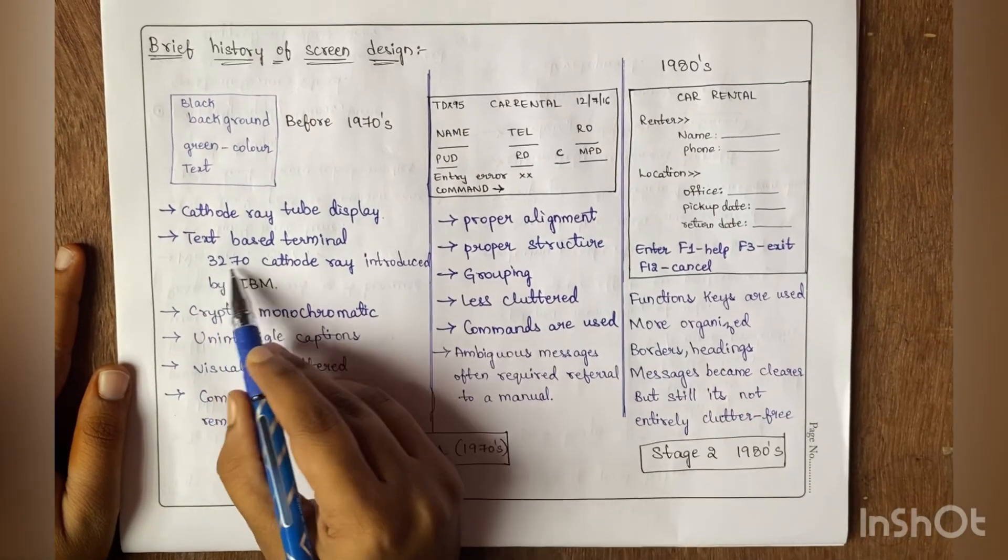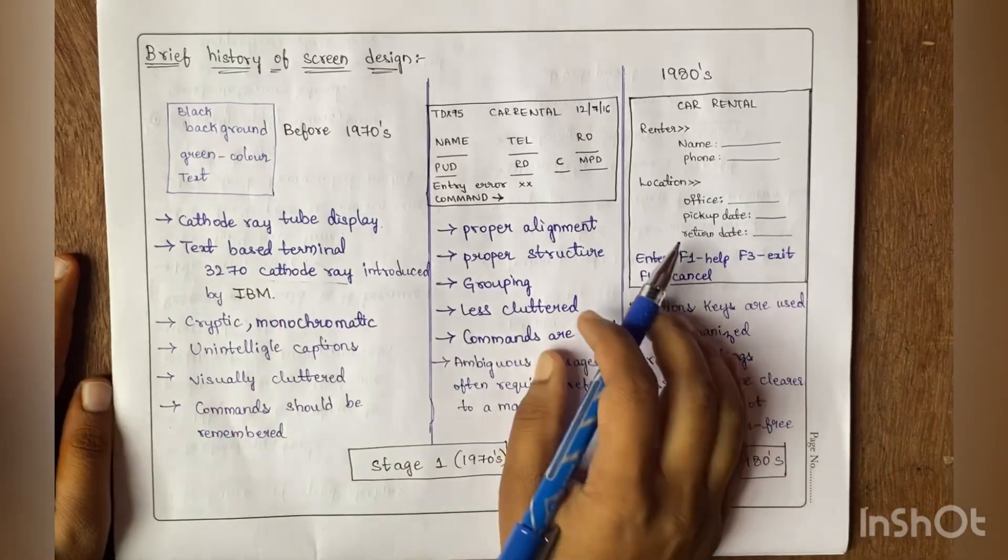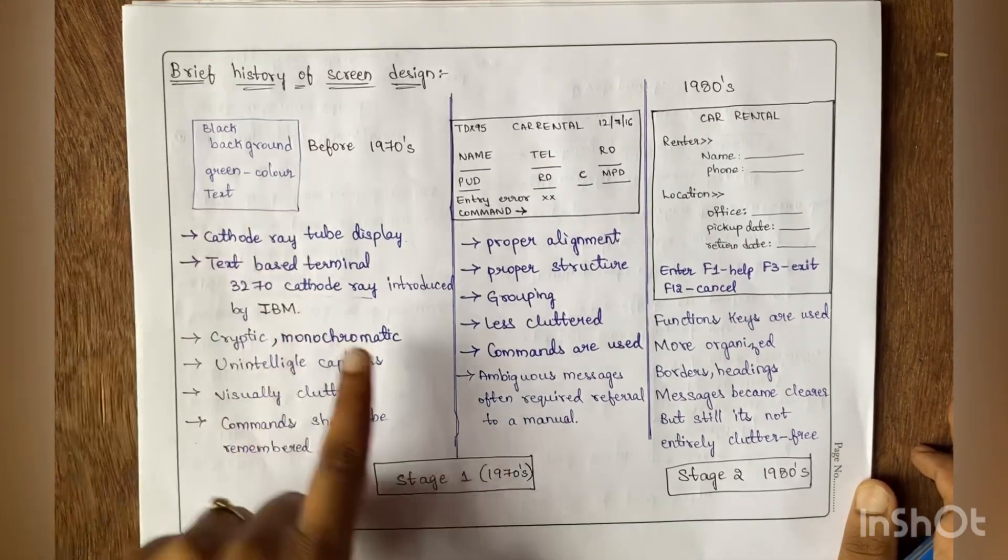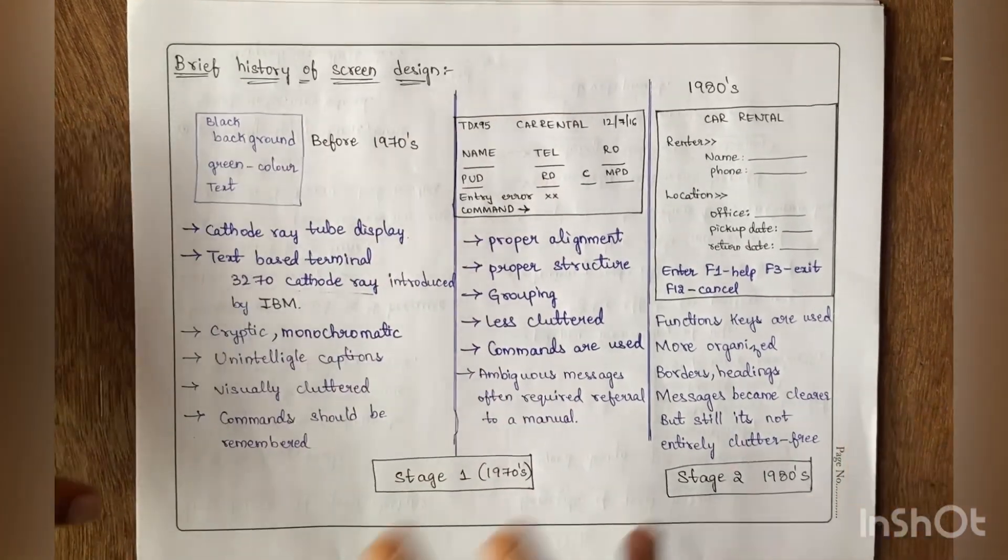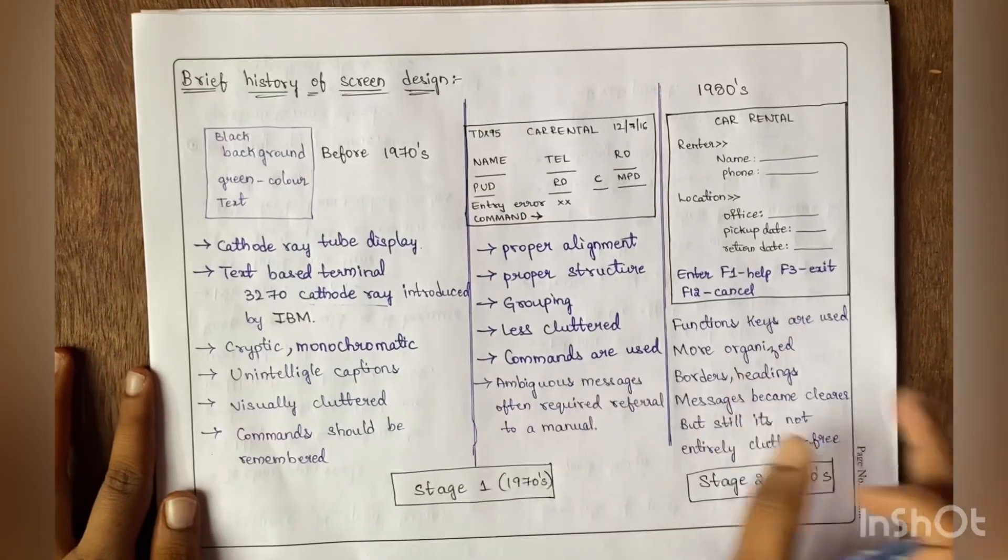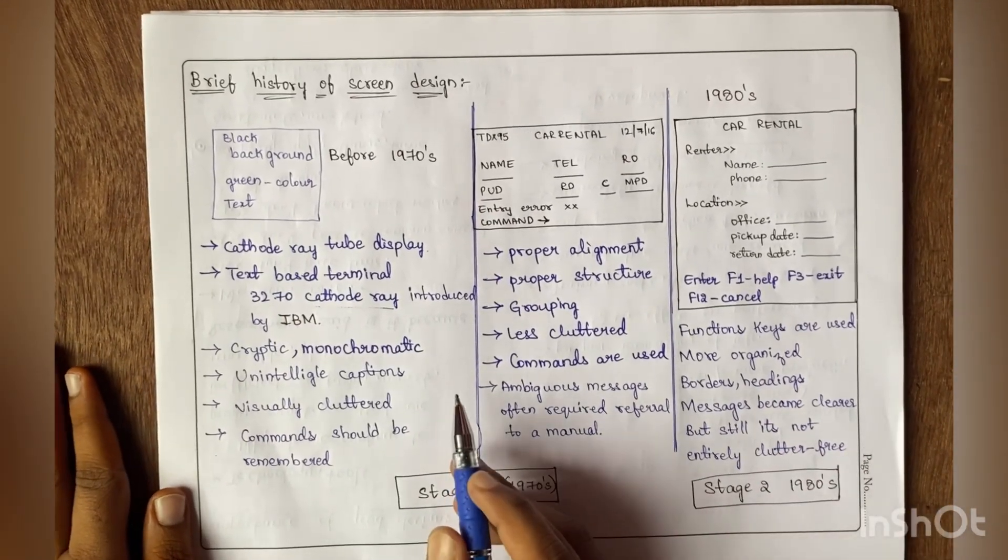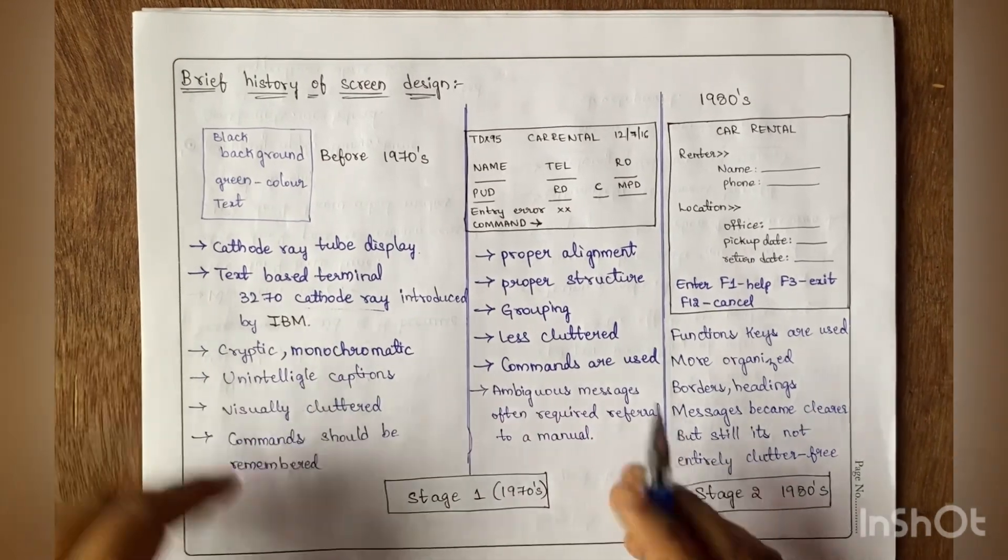The IBM 3270 cathode ray display was completely cryptic and monochromatic, meaning single color—only green text. They had unintelligible captions that we could not understand, and they were visually cluttered.